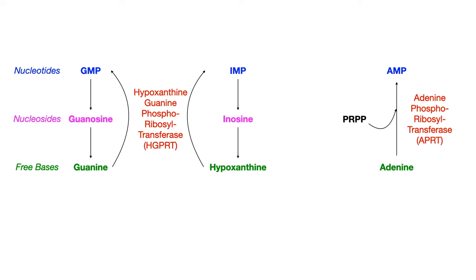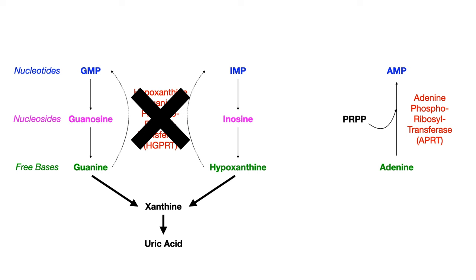Both guanine and hypoxanthine, if they're not going to be used for recycling, can be turned into xanthine. Once you have xanthine, xanthine gets converted by xanthine oxidase into uric acid. Something very high yield to know for exams and extremely clinically relevant is that there's a disease that happens if HGPRT is knocked out and defective. If we knock out the enzyme HGPRT, which under normal circumstances would recycle guanine back to GMP and recycle hypoxanthine back to IMP, we cannot go in the direction of the purine salvage pathway.